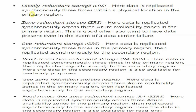Now the replication techniques. First, Locally Redundant Storage, or LRS, is selected by default when you create a storage account. This means your data is replicated synchronously three times within a physical location in the primary region.